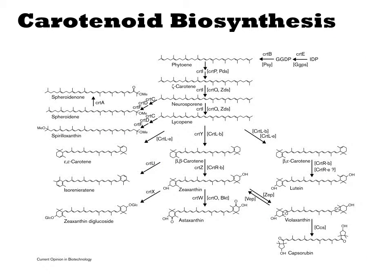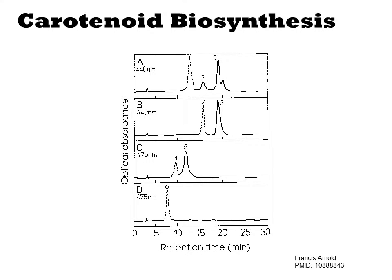Here is another study by Francis Arnold. They are expressing combinations of carotenoid-related genes in E. coli to explore the chemical diversity of biosynthesis. Experimentally, they put a different combination of genes into each cell, grow it up, extract the carotenoids, run them on a chromatography instrument, and report the spectrum. Technically, this is the experiment they need to perform to quantify yields and identify the chemicals present in each strain. However, they also provide a demonstration experiment.